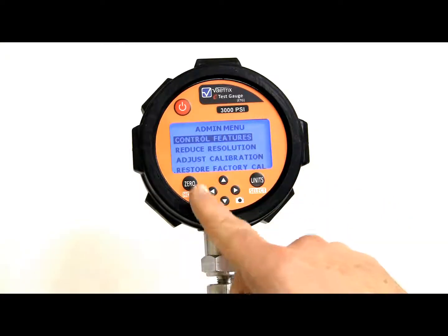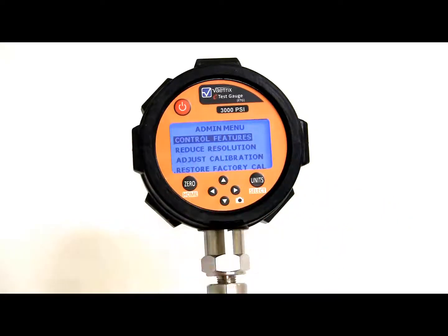So, in admin, you can restore the factory cal, you can perform a calibration, you can reduce the resolution on the display, say you wanted to not see the full digits on the display, you can actually adjust that.